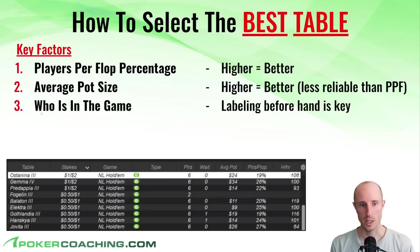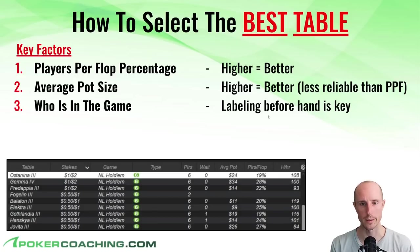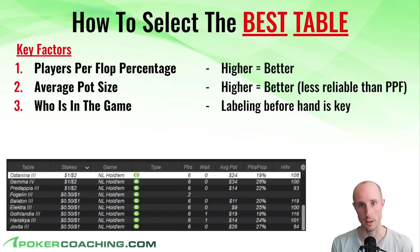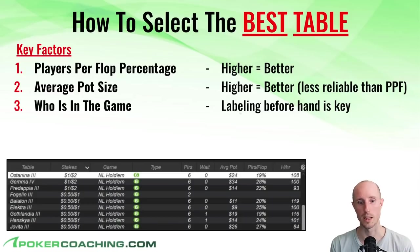Number three of the key factors is who is in the game. This requires some work beforehand, but it pays dividends later. If you label the players on the table — whether you're in the game or just observing — when you're going through the lobby, you can see a preview of the table showing the colors of the players you have labeled. In my case, if I see baby blue or purple, I want to get on that game. If I see a lot of the regular colors — green, yellow, red — I know it's just a reg-fest and not a game at the top of my list.